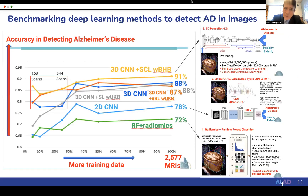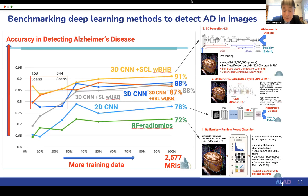We've been studying in great detail what it is about deep learning methods that make them able to detect disease. In this benchmarking effort, a wide range of different deep learning workflows were applied, and their accuracy in detecting Alzheimer's disease in independent data is shown. The accuracy goes as high as 91%, and on the x-axis you see the amount of training data used to train the models, which obviously also varies by method.